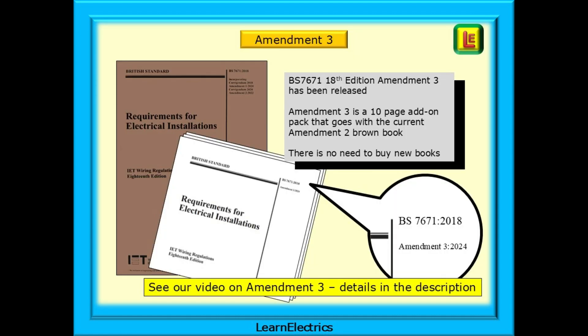BS 7671 18th Edition Amendment 3 has been released and is now live. Amendment 3 is a 10-page add-on pack that goes with the current Amendment 2 Brown book. If you have the Brown Wiring Regulations book and you print the 10-page add-on pack, this will effectively convert your book into Amendment 3 and there will be no need to buy new books. Nothing in the Amendment 3 pack will affect the subject of this video, which is maximum demand and diversity. For a complete update on Amendment 3 and how to download your own free copy, see our video on Amendment 3 — we will leave details in the description.